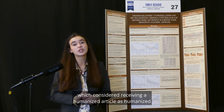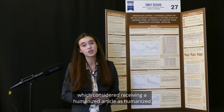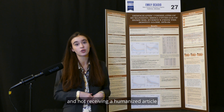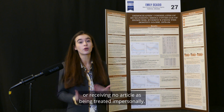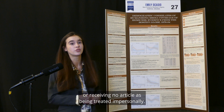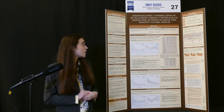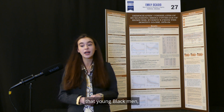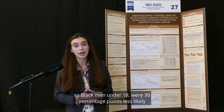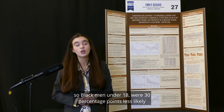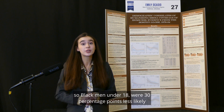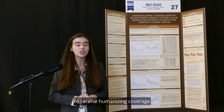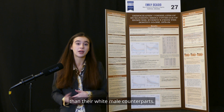My main score is called the composite humanizing score, which considered receiving a humanized article as humanized and not receiving a humanized article or receiving no article as being treated impersonally. The largest demographic finding was that young black men — black men under 18 — were 30 percentage points less likely to receive humanizing coverage than their white male counterparts.